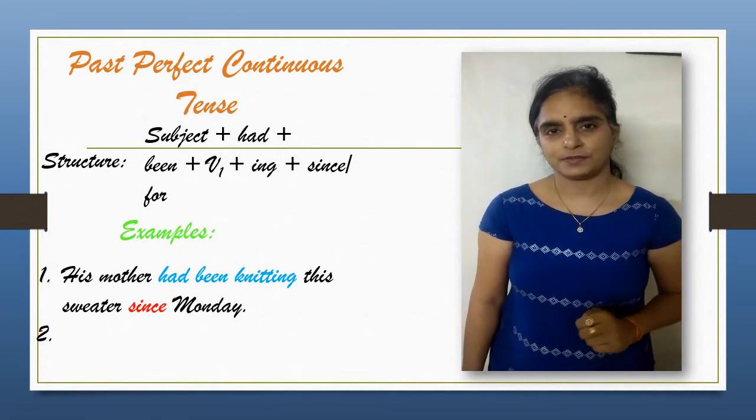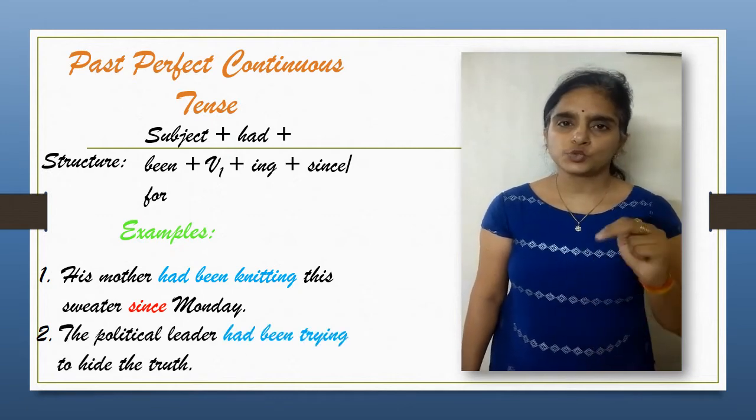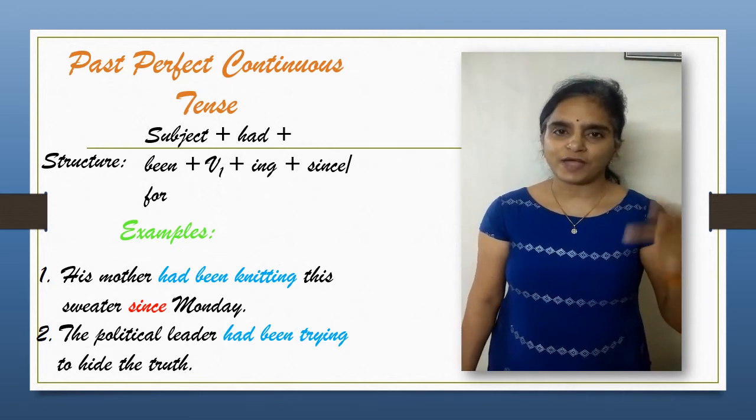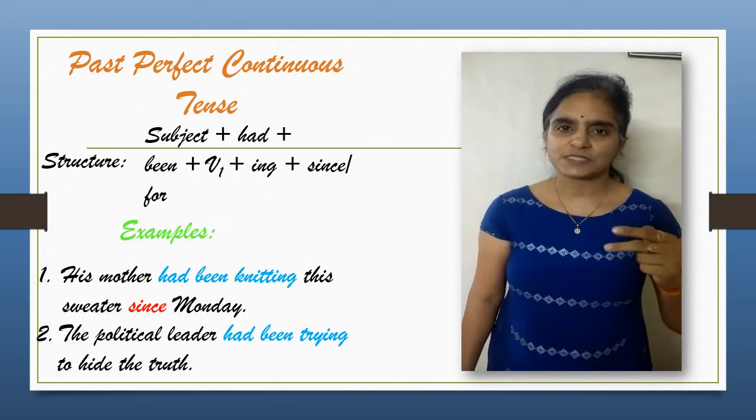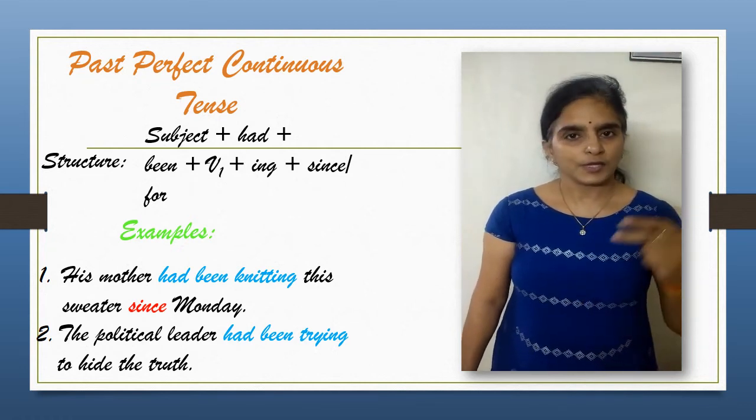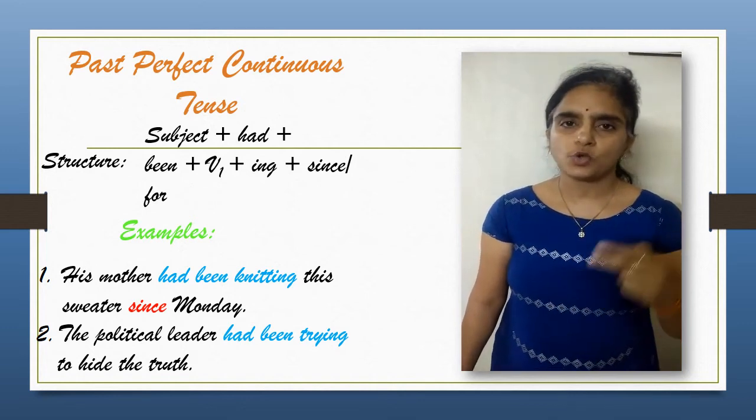Instance two: it is used to describe a repeated action in the past. For example, the political leader had been trying to hide the truth. These instances clearly define the structure which has been elaborated in the beginning. I hope past perfect continuous tense is clear to all of you.